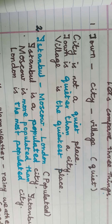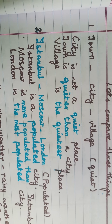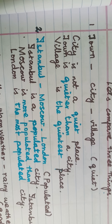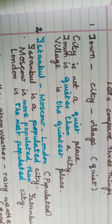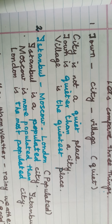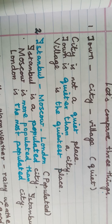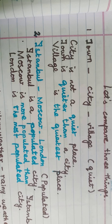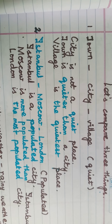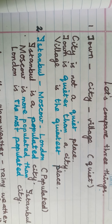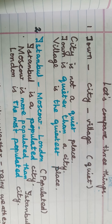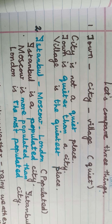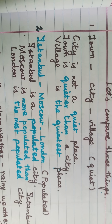Second example: Istanbul is in Turkey, Moscow is in Russia, London in England. The bracket word is 'populated.' Istanbul is a populated city — positive degree. Moscow is more populated than Istanbul — comparative degree. London is the most populated city — superlative degree.